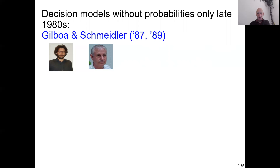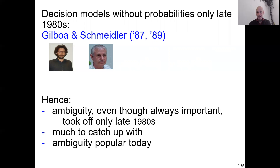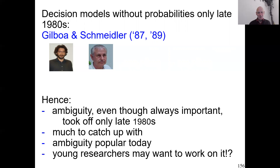Historically, Keynes and Knight in 1921 and then Ellsberg — for a long time economists knew this theory was important and necessary, but nobody could invent it. Only at the end of the 1980s came people clever enough to do so. Now we have to catch up, because ambiguity is very important to economics and plays a role in almost every economic field. This also explains why ambiguity is very popular today — it's being applied in more and more fields. For a young researcher, it's a good topic to take up and apply across all kinds of fields. We are going to work on it and define models for it in the next recordings.